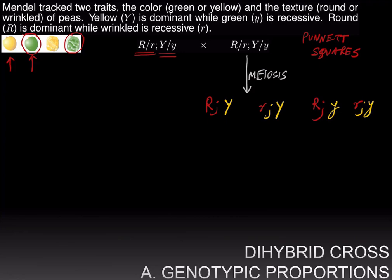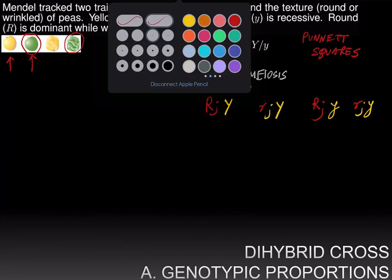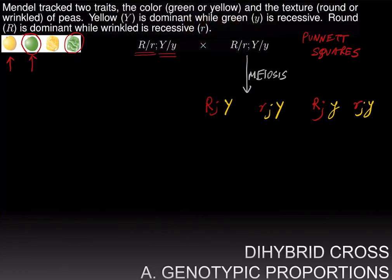Furthermore, from Mendel's law of independent assortment each of these gametes are equally likely and therefore we will have a quarter big R big Y, a quarter little r big Y, a quarter big R little y, and a quarter little r little y. The other individual, since both the individuals involved in this cross have the same genotype, they will produce the same type of gametes.